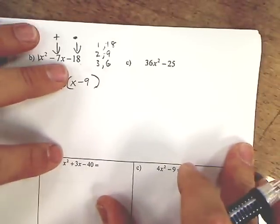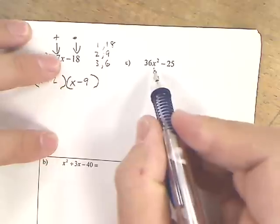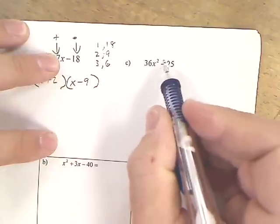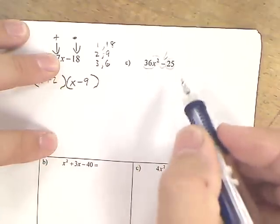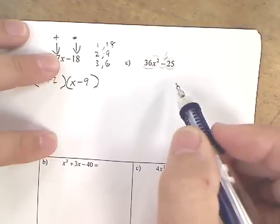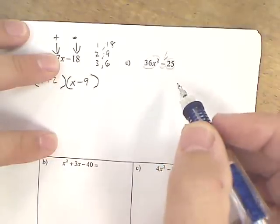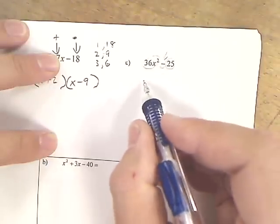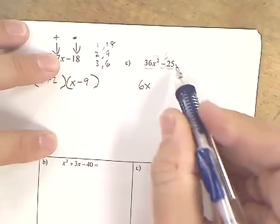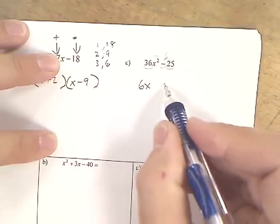And then a difference, the subtraction of two squares. I can take the square root of each one of those numbers. This is one of those trick ones we've been talking about. It should be fast and easy. What's the square root of this guy? It is 6x. Square root of that guy, 5.